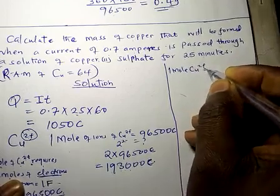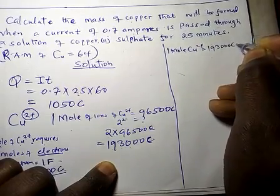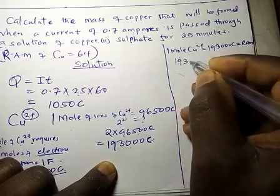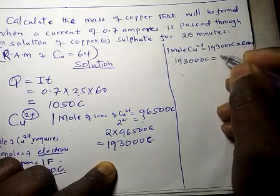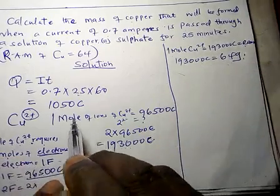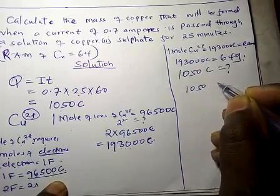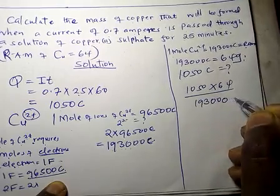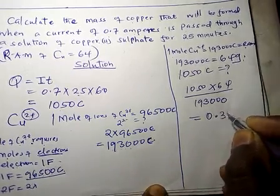1 mole of Cu²⁺ contains 193,000 coulombs, which equals the RAM. So 193,000 coulombs equals 1 mole equals 64 grams. We ask: what mass corresponds to 1050 coulombs? That is 1050 times 64 divided by 193,000, and this gives us 0.35 grams.